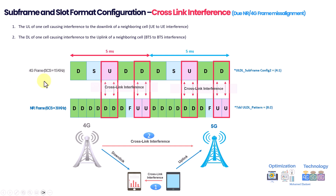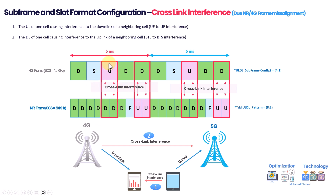For example, the 4G configuration shown here is a 3-2-1 pattern: three downlink, one special slot, and one uplink. The 5G static pattern being used is 8-2-2, meaning seven downlink, one flexible, and two uplink. As you can see in this particular configuration, there is a cross-link interference mismatch — downlink is interfering with uplink and vice versa.